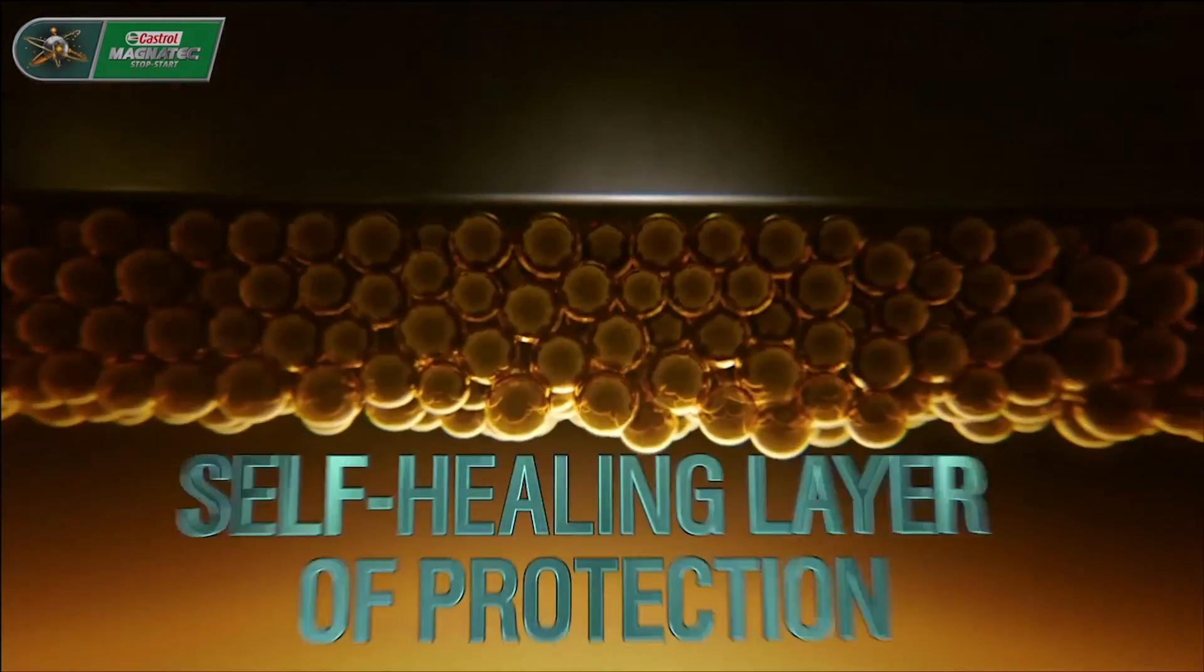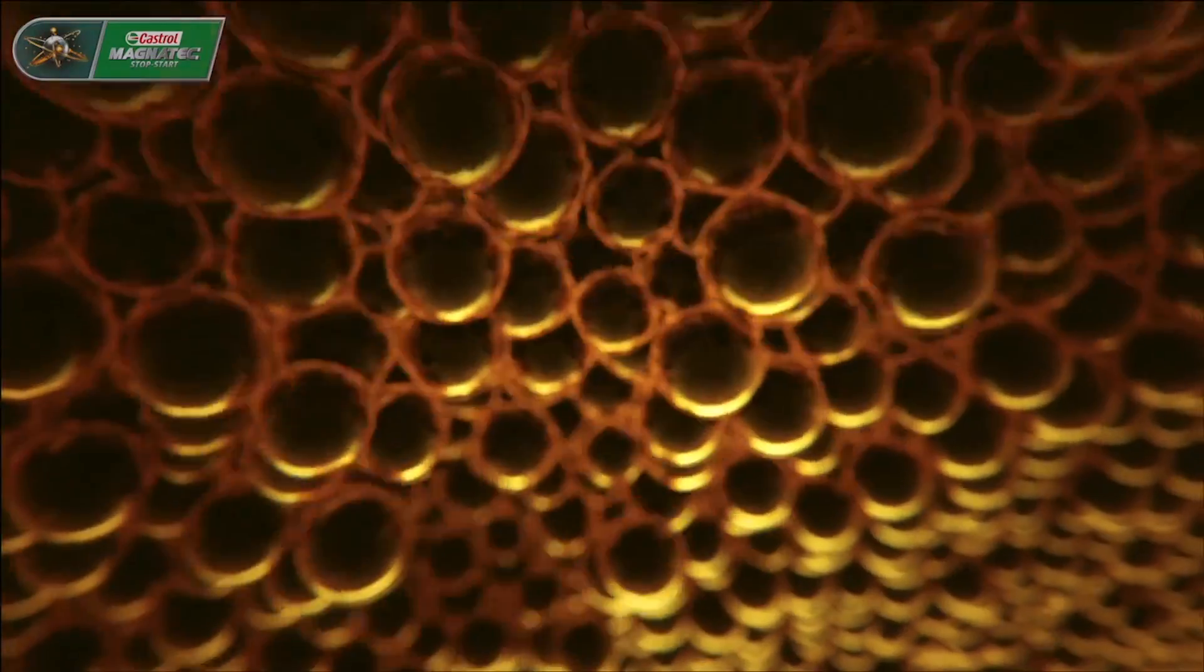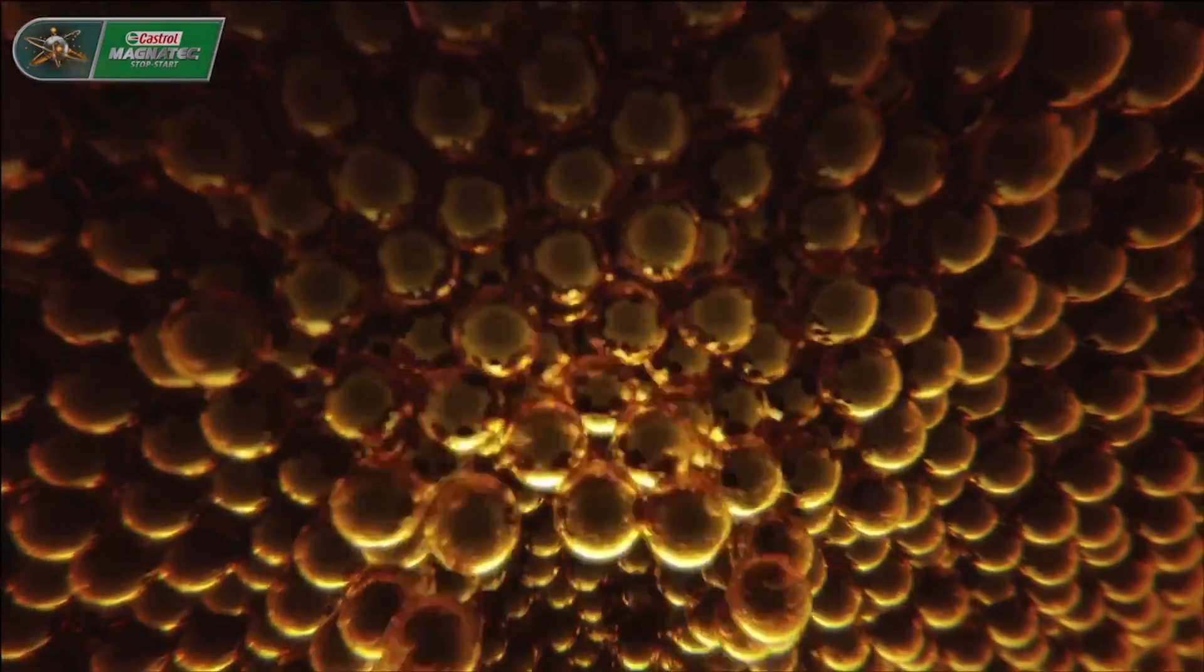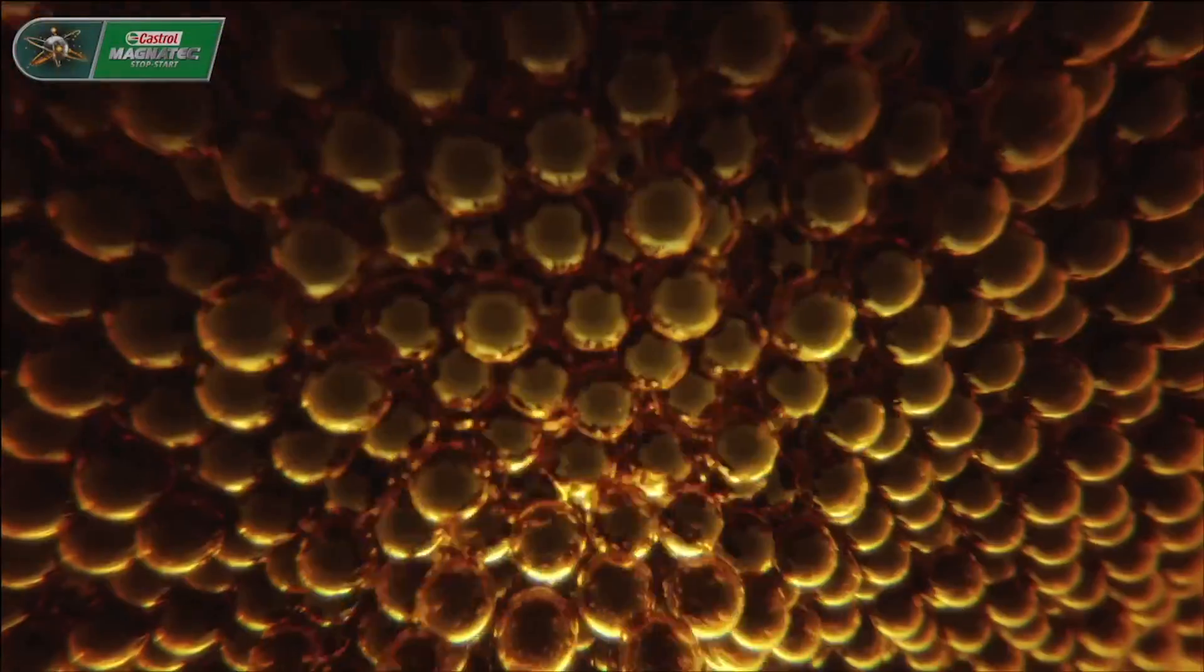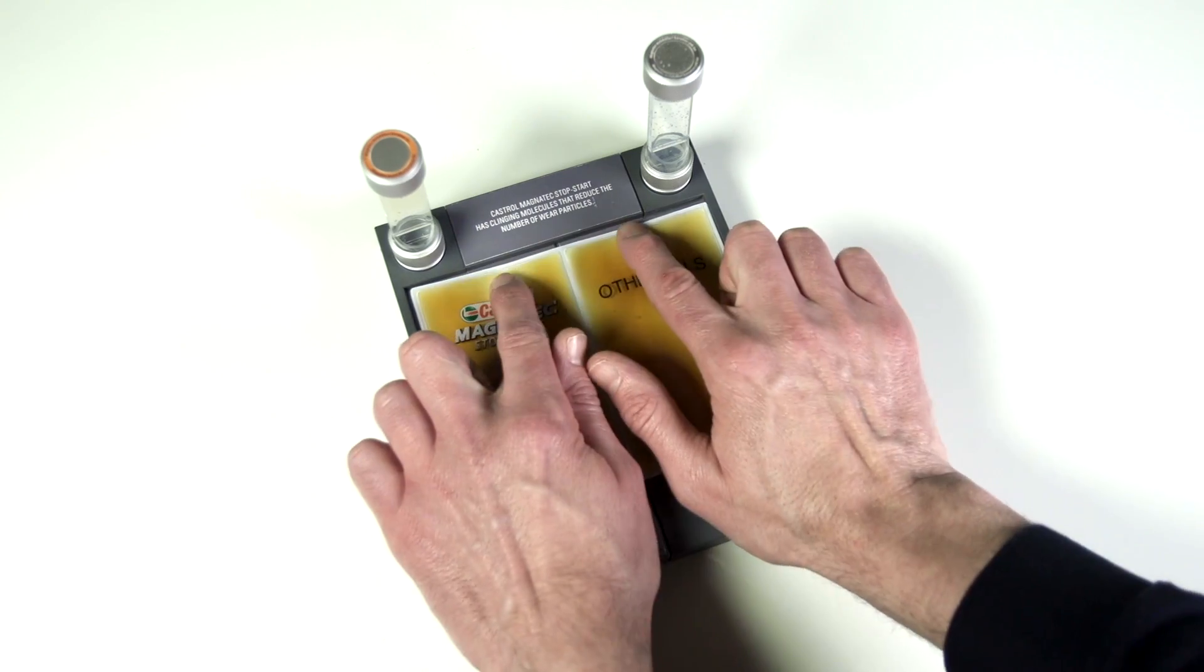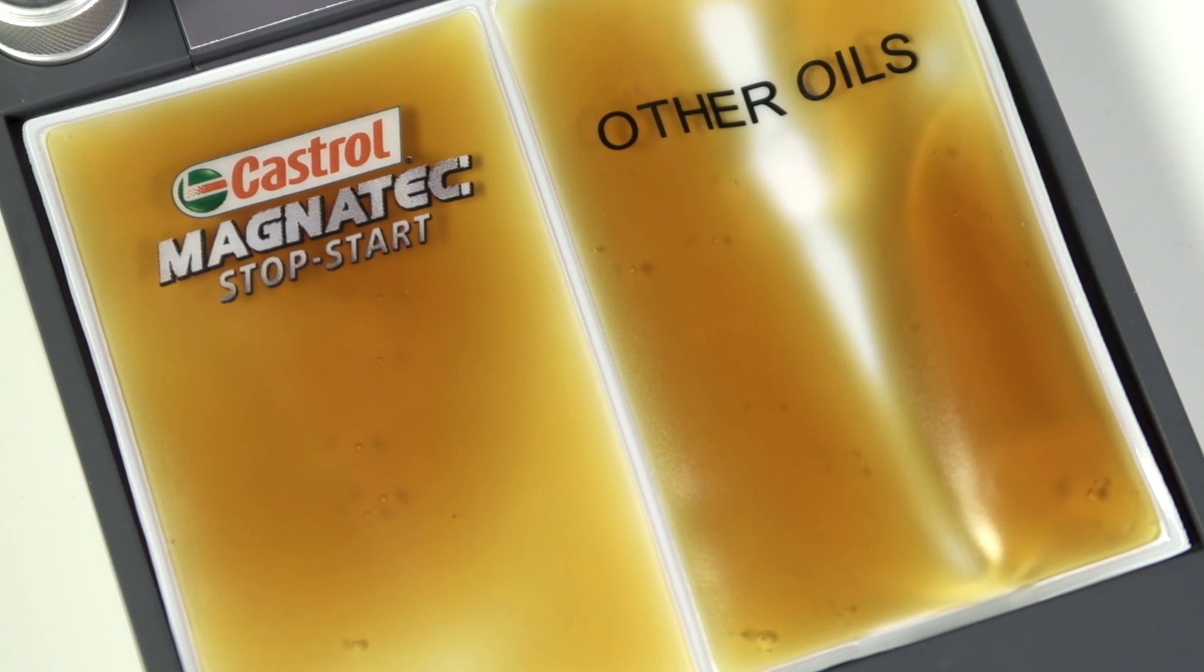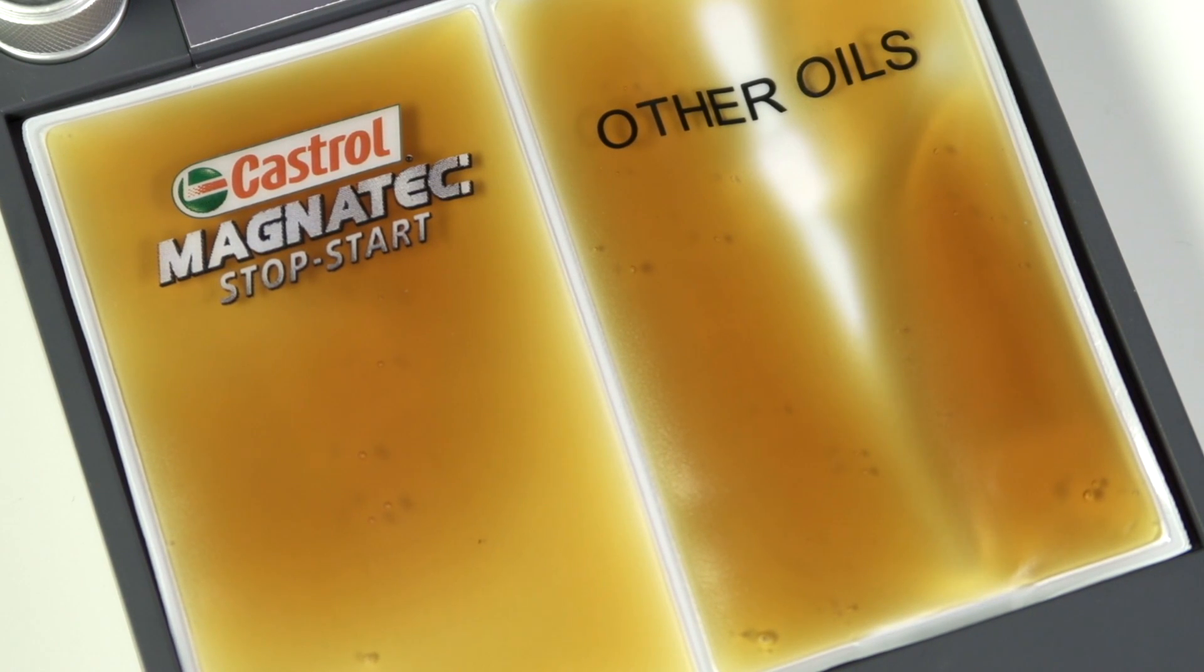Castrol Magnatec stop-start has intelligent molecules which cling and form a self-healing layer, so it's always ready to protect at each of the critical stages of stop-start driving. The oil pouches dramatize the self-healing layer of protection. For Castrol Magnatec stop-start, you can see the layer reforming, ensuring continuous protection.